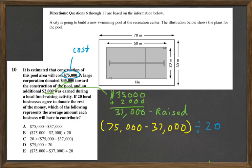So divide by 20, and look for an answer that looks like that in your options. And you find that it would be E. $75,000 minus $37,000 divided by 20.